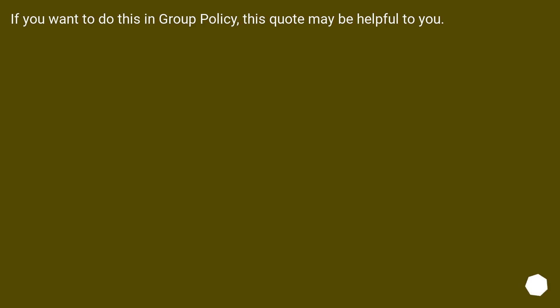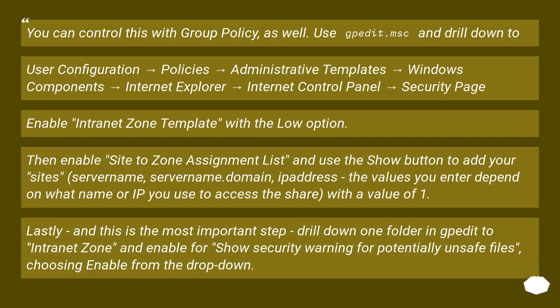If you want to do this in group policy, this quote may be helpful to you. You can control this with group policy as well. Use gpedit.msc and drill down to: User Configuration > Policies > Administrative Templates > Windows Components > Internet Explorer > Internet Control Panel > Security Page. Enable Internet Zone Template with the low option. Then enable Site to Zone Assignment List and use the Show button to add your site's server name, server name.domain, or IP address — the values you enter depend on what name or IP you use to access the share — with a value of 1.